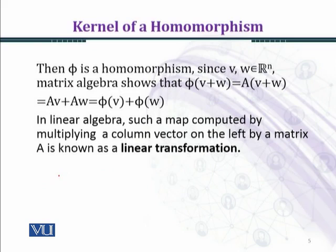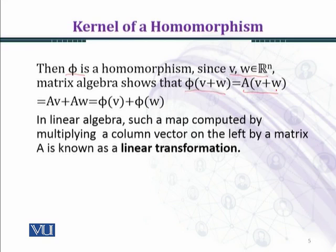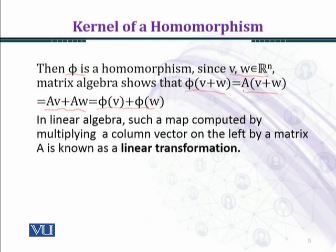We want to check whether phi is a homomorphism or not. You can easily see that phi is a homomorphism, because for every v, w belonging to R^n, the matrix algebra shows that phi(v + w) equals A(v + w), which equals Av + Aw, and using the definition in reverse we shall obtain phi(v) + phi(w). It implies that phi is a homomorphism.